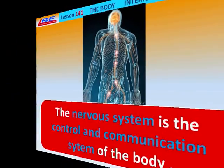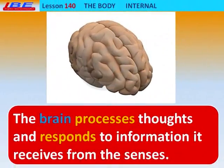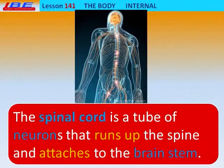The nervous system is the control and communication system of the body. The nervous system sends and receives messages. The brain processes thoughts and responds to information it receives from the senses. The spinal cord is a tube of neurons that runs up the spine and attaches to the brain stem.